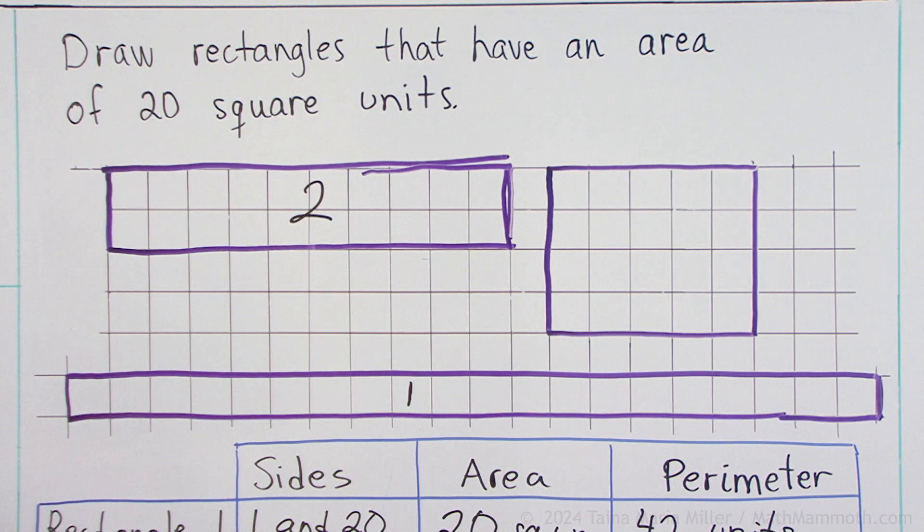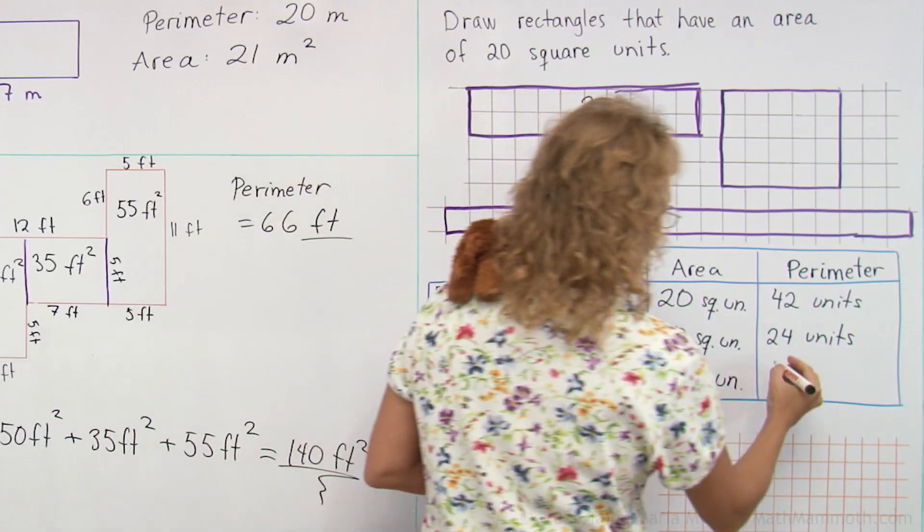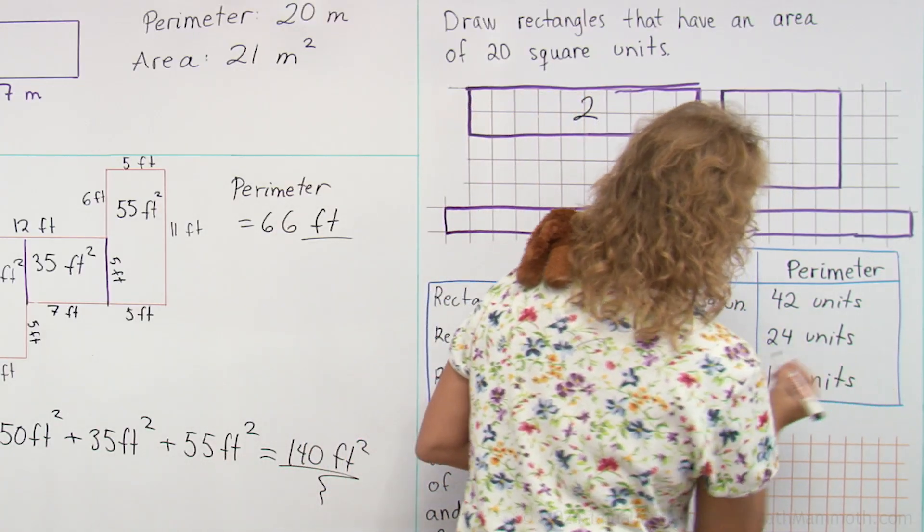And then the last one. 4 and 5 is 9, another 9, so 18. Shorter yet.